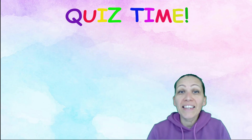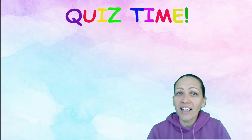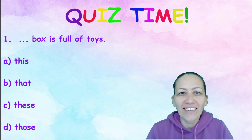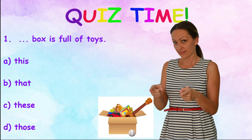And now it's quiz time. Are you ready? Let's start. Number 1: ___ box is full of toys. A. This. B. That. C. These. D. Those.